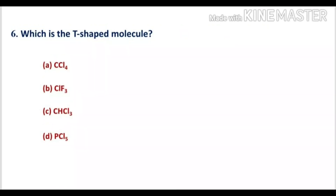Question number 6: which is a T-shaped molecule? There are four options — option A, CCl4; option B, ClF3; option C, CHCl3; option D, PCl5.